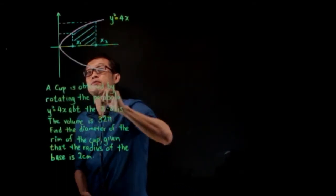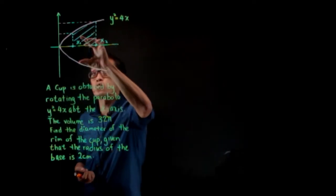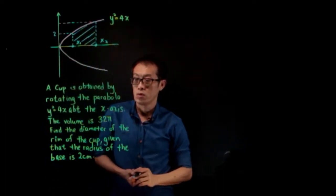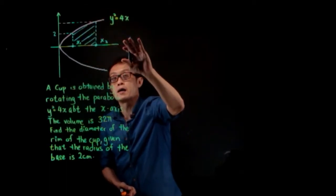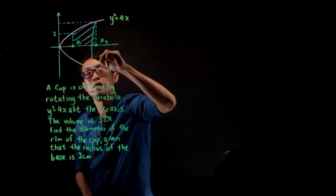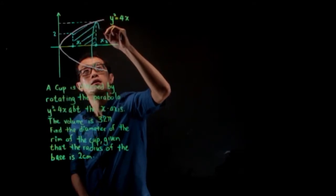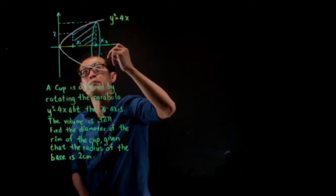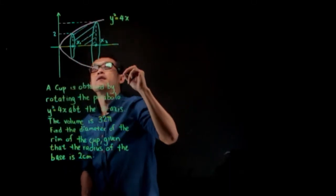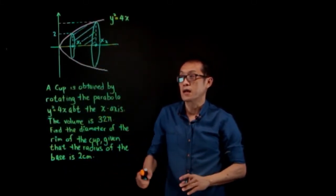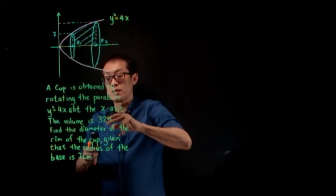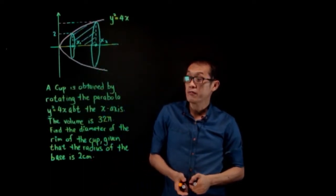The radius of the base is 2 — this part is the base, and this is the rim of the cup. The base radius is 2. It is rotated about the x-axis. Let me draw it for you in 3D — you get a circular top rim and then the base. Can you see? This is the cup.